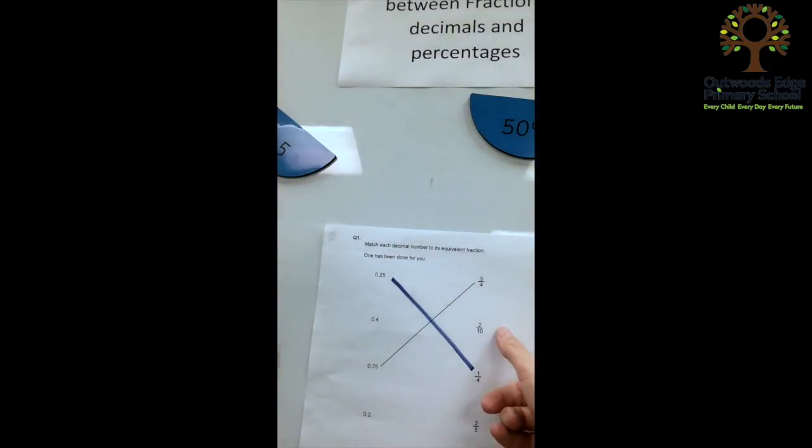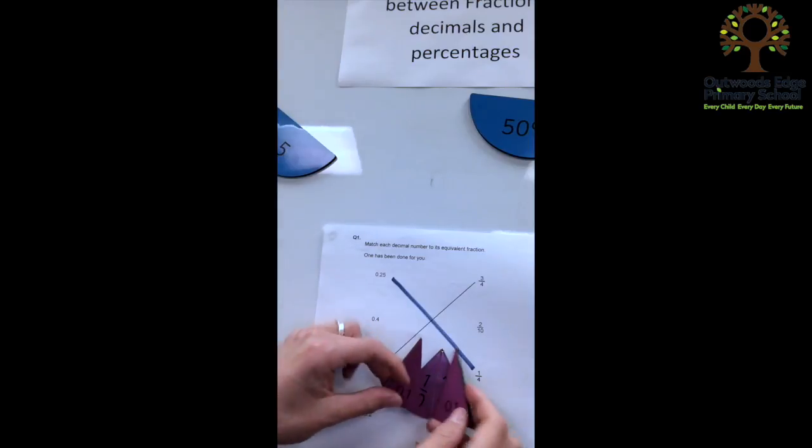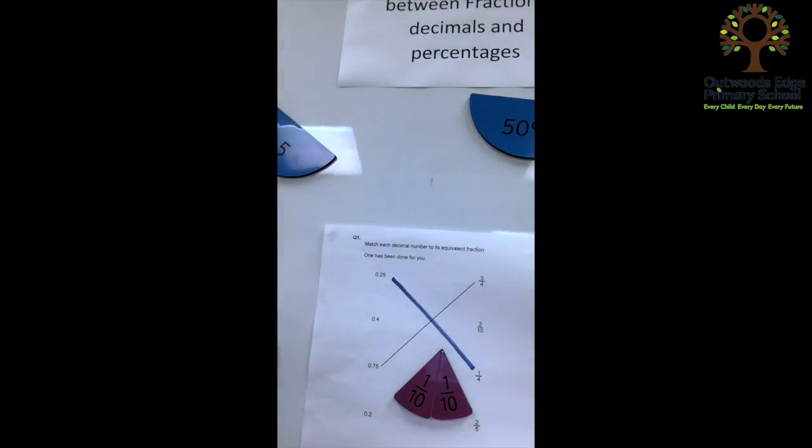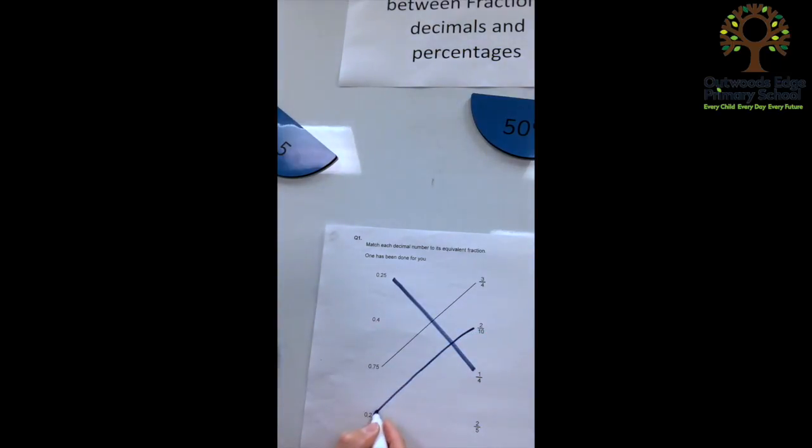So now that just leaves us with 2 tenths and 2 fifths. Now, I'm going to find 2 tenths to begin with. And if we put those together, we can see that that is equivalent to 2 0.1s. Now, 0.1 add 0.1 makes 0.2. You can actually see that that also fits nicely over the top. So when we've calculated that, we can match up 2 tenths to 0.2.